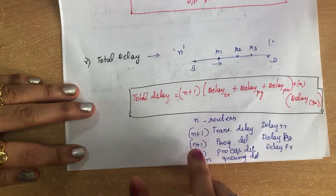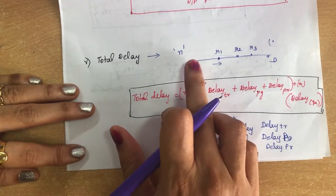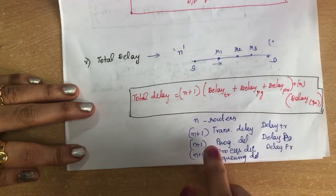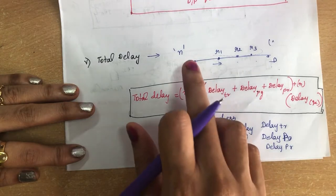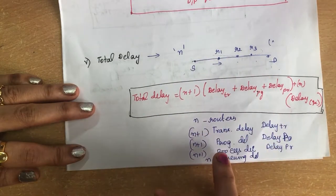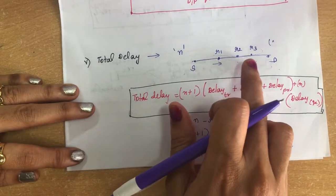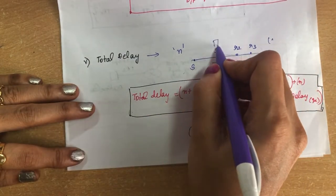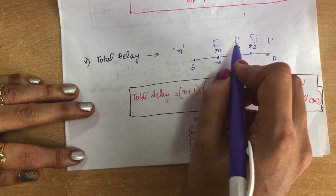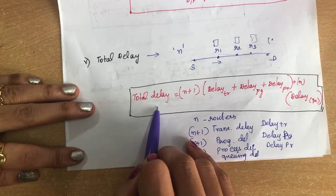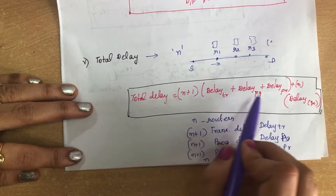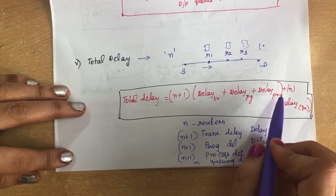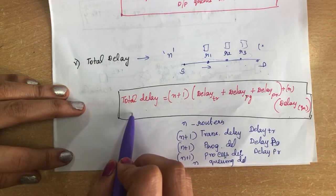If there are n routers, there will be n+1 links. Transmission delay, propagation delay, and processing delay each happen n+1 times, while queuing delay happens n times (only at routers). Total delay = (n+1) × (transmission delay + propagation delay + processing delay) + n × queuing delay.